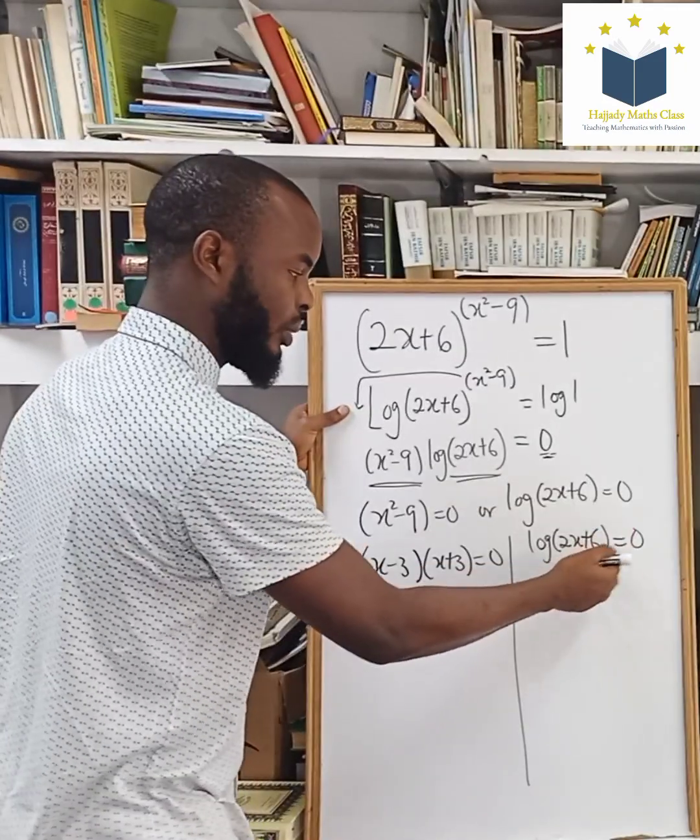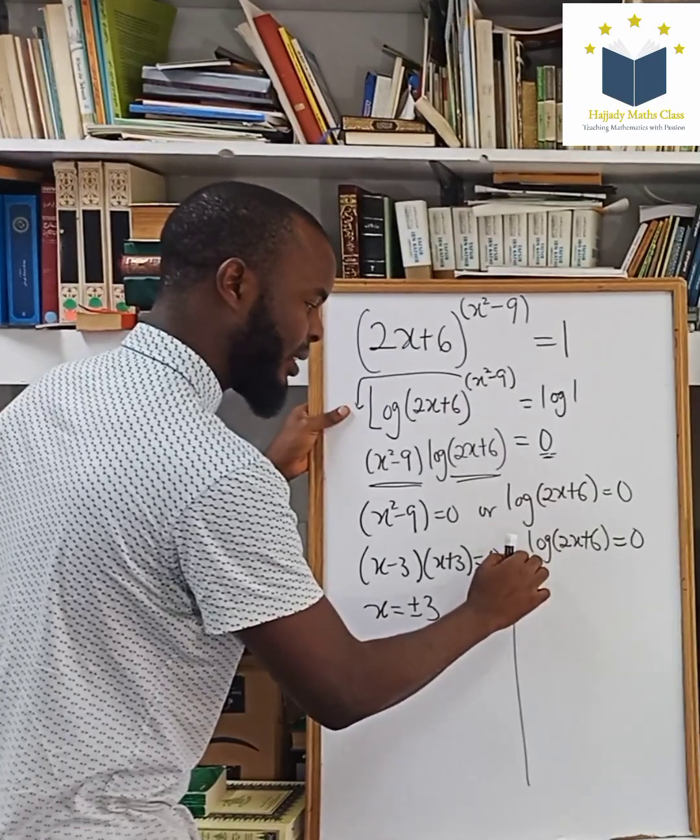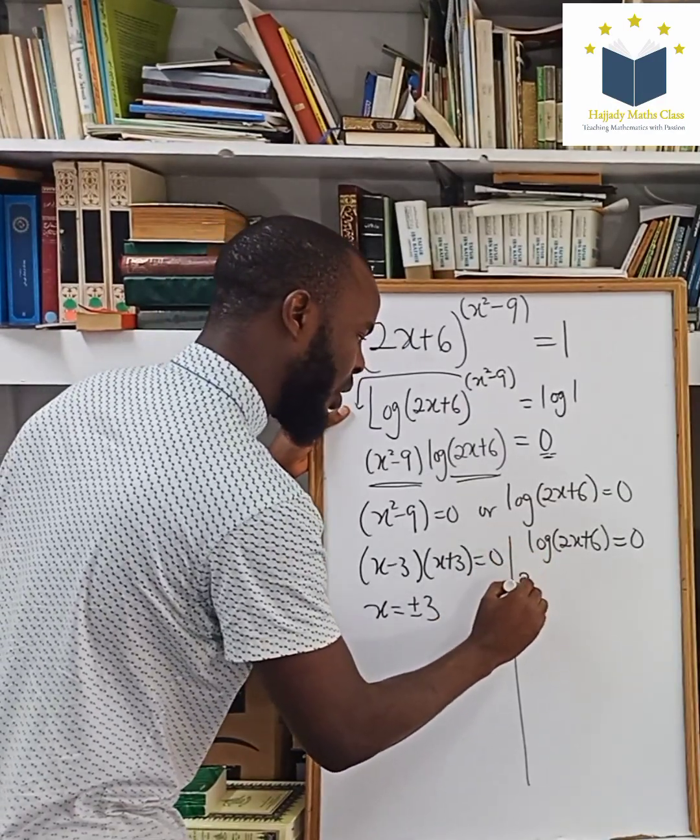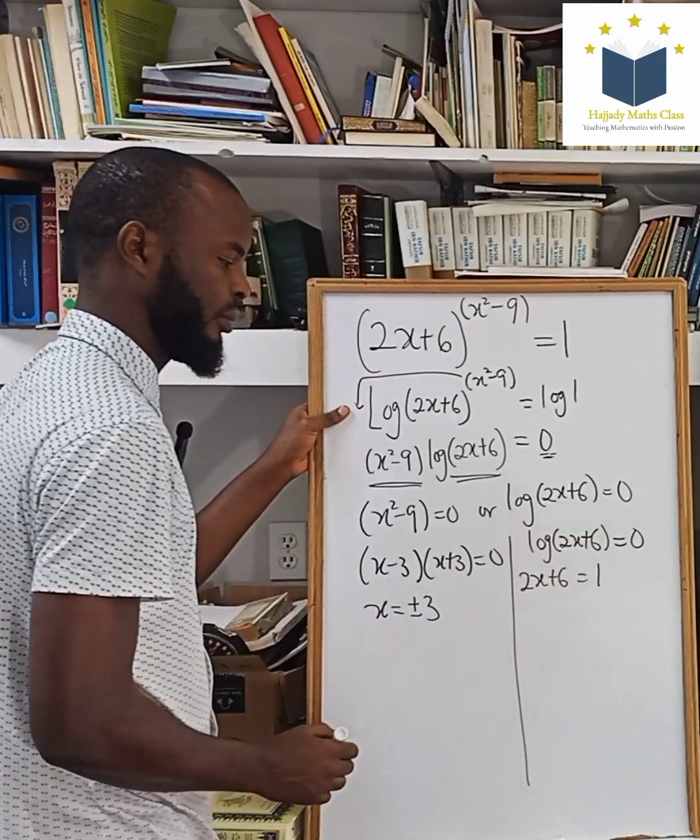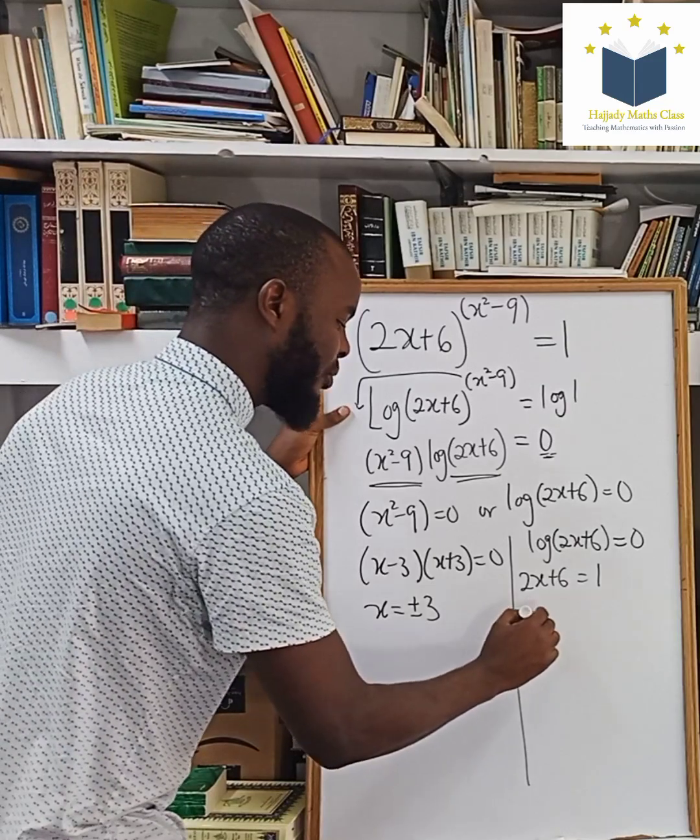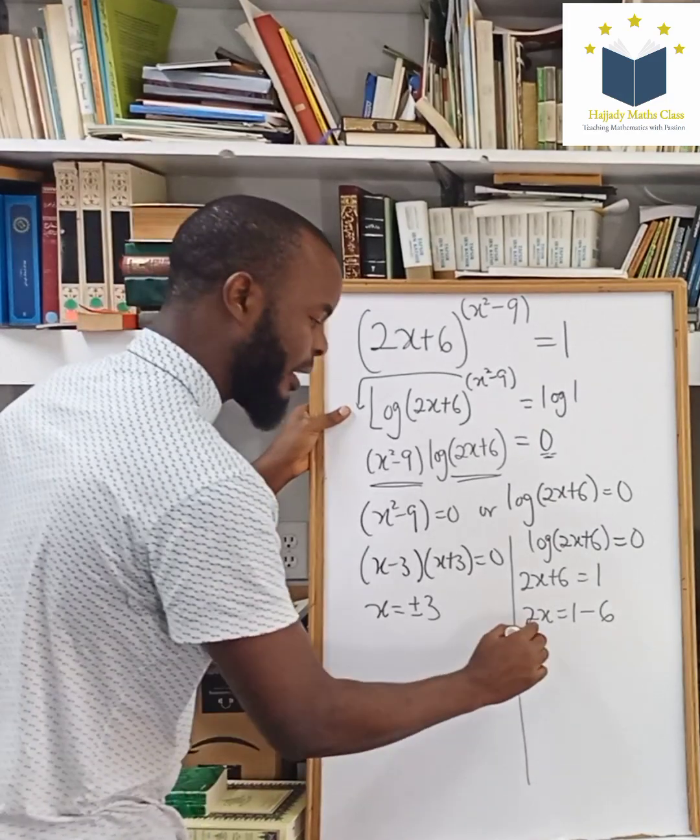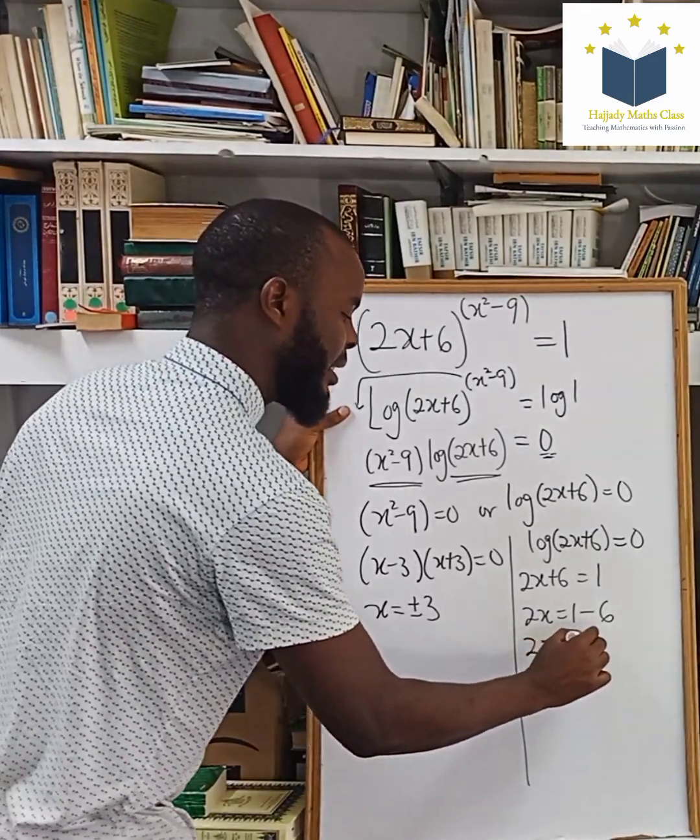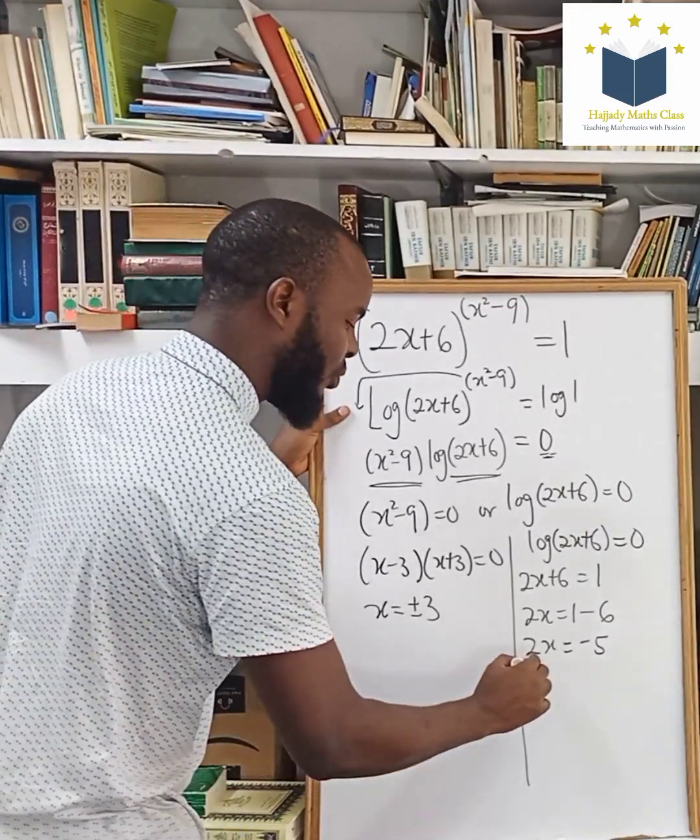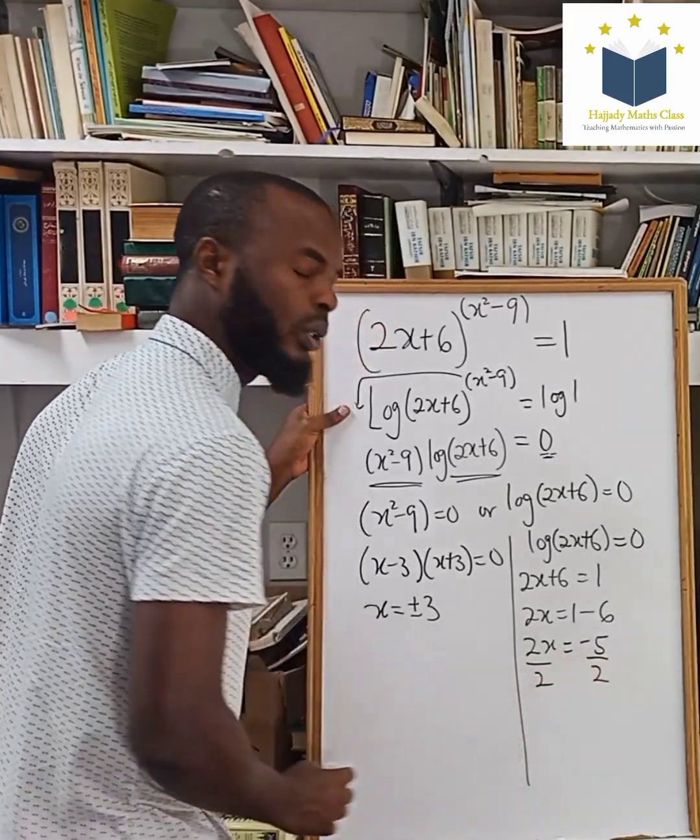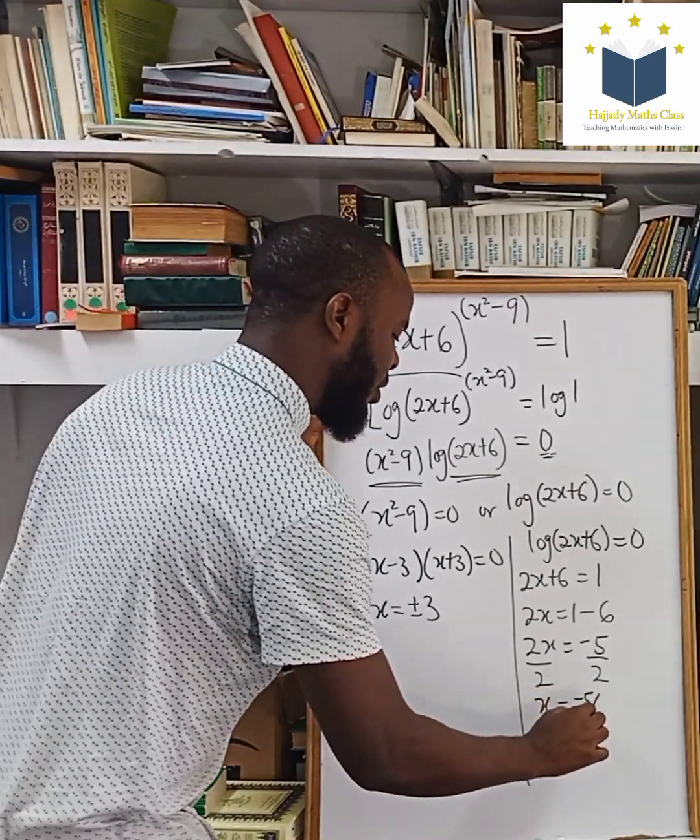Applying log, the exponents to both sides, the exponent side is going to cancel the log whereby you have 2x plus 6 and 10 to the 0 is going to give you 1. So here you can have 2x equals 1 minus 6. Here, 2x equals to negative 5. Divide both sides by the coefficient of x, which is 2. Then my x can be equals to negative 5 over 2.